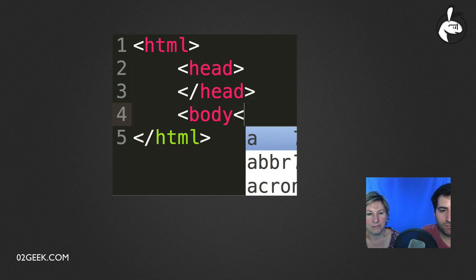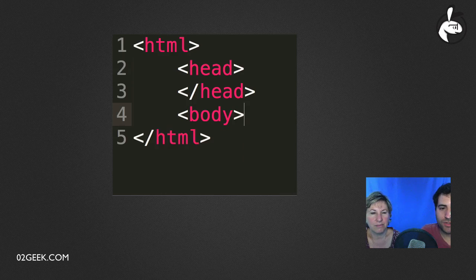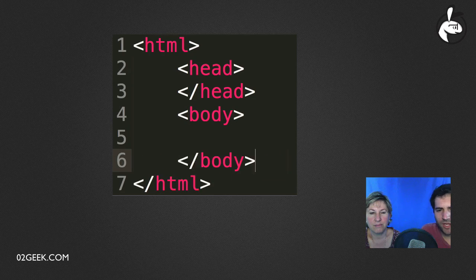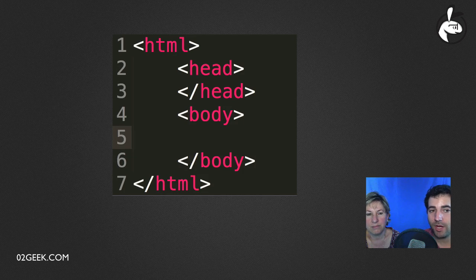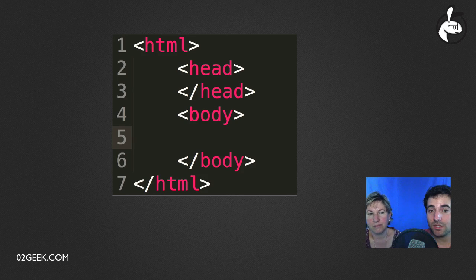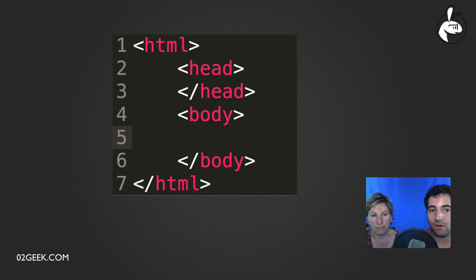We're going to type your body tag, close the tag, and then close the body. One thing I like doing is indenting — some tools do it automatically, like this one. There we go, we just created a body tag. As a recap: we have our HTML tag that holds everything, we have the head inside it, and now we have the body. We really have the full structure of an HTML page — all that's missing is to start filling it up with content.